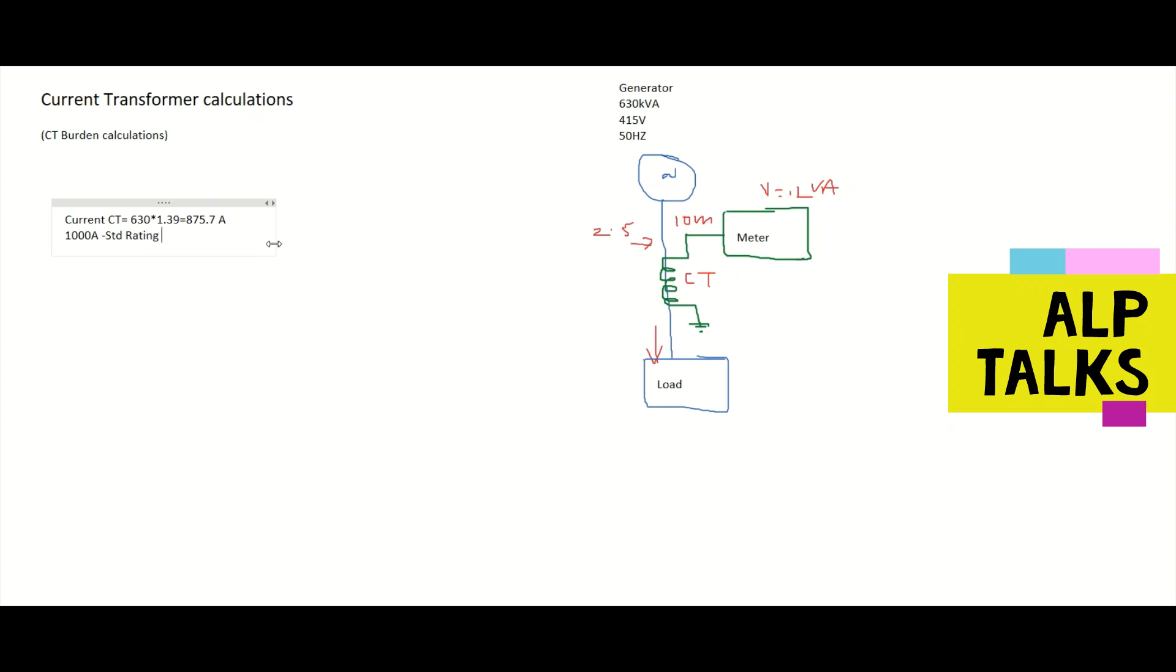So we will calculate burden now. How to calculate burden of CT. CT burden is nothing but whatever the cable is there, cable resistance plus the meter burden plus cable burden. So how to calculate cable burden? For calculating cable burden, VA cable, we have one formula.